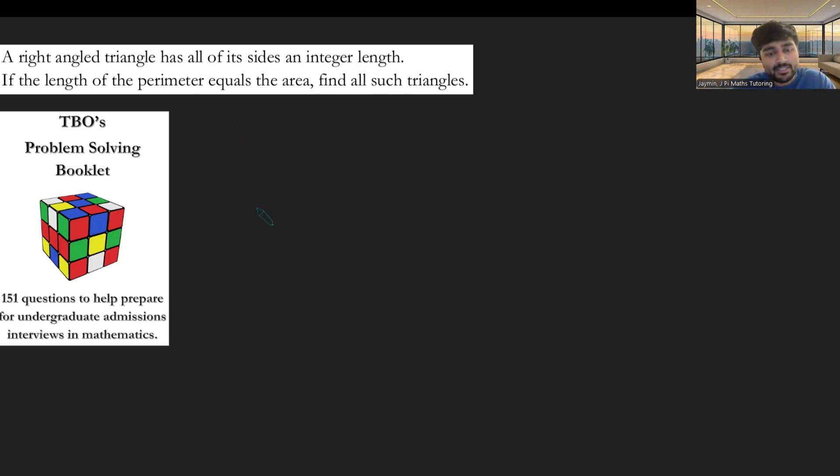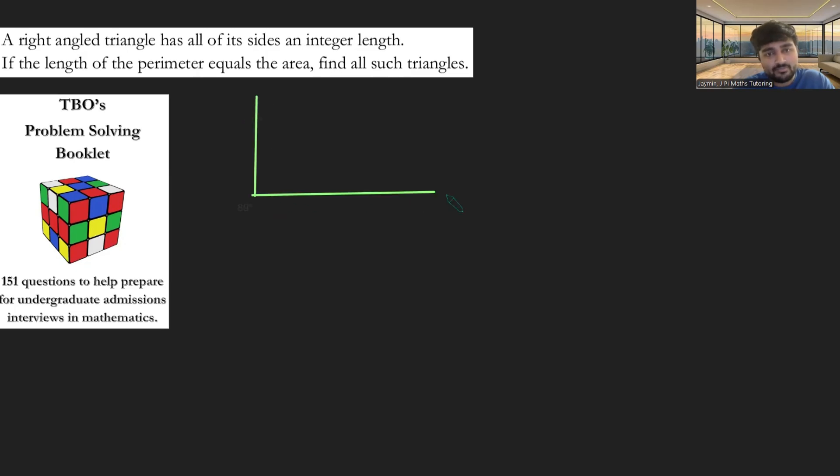Let's draw an arbitrary right-angled triangle. So something like this. There's a right angle, and we'll call the side lengths A, B, and C. Okay, what do we know? We have A, B, and C are integers, and obviously positive integers here.